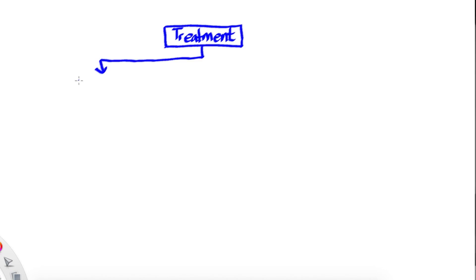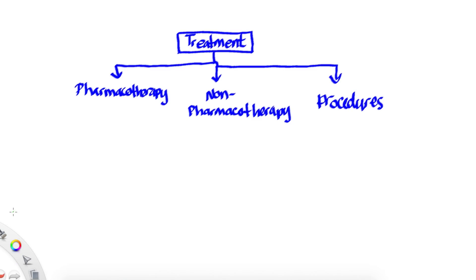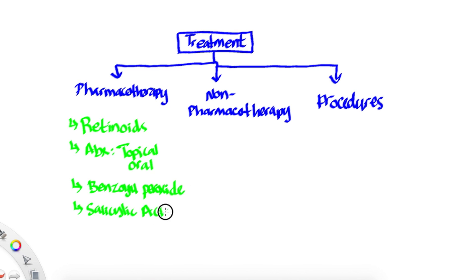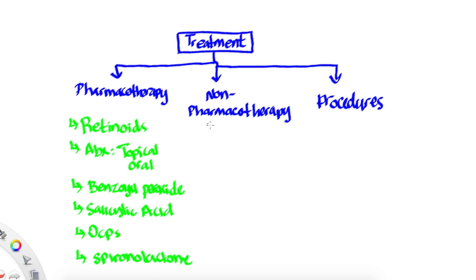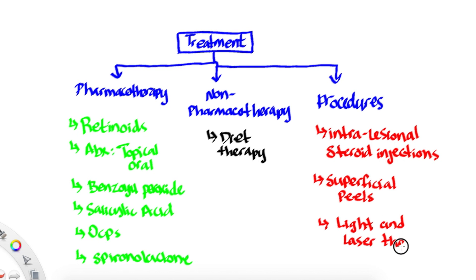Treatment for acne can consist of pharmacotherapy, non-pharmacotherapy, and procedures. Pharmacotherapy includes retinoids, topical retinoids, antibiotics whether topical or oral, benzoyl peroxide, salicylic acid, and other things such as oral contraceptive pills or selective androgen receptor antagonists such as spironolactone. There is not much that involves non-pharmacotherapy; some may suggest diet changes, however there is no strong evidence that any certain diet contributes to acne. Procedures can include intralesional steroid injections, superficial chemical peels using glycolic acid or salicylic acid, as well as laser therapy and light therapy.